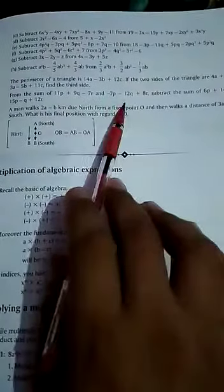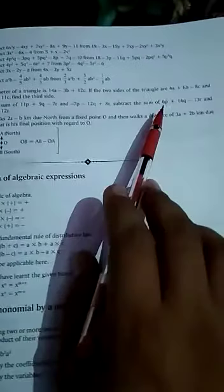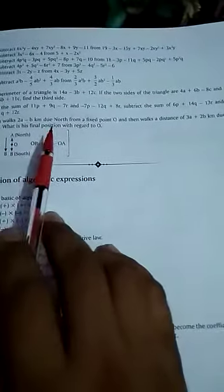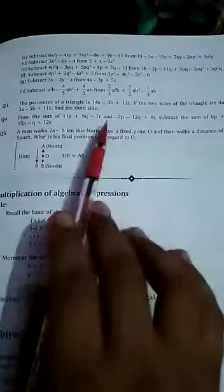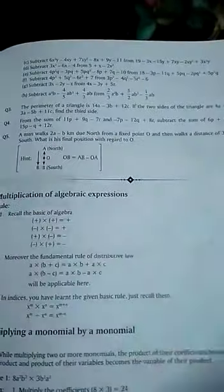In this question, we are given two algebraic expressions whose sum we must subtract from another sum. We are given two pairs of algebraic expressions. First we will sum the first pair, then sum the second pair, and then subtract the second sum from the first sum.